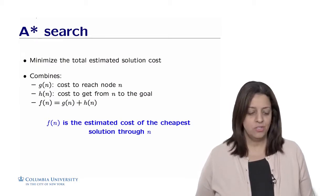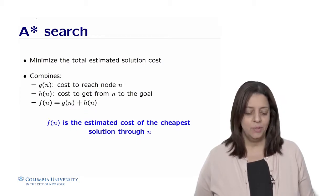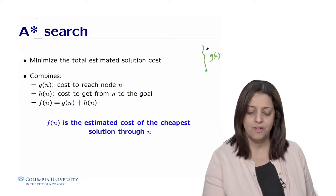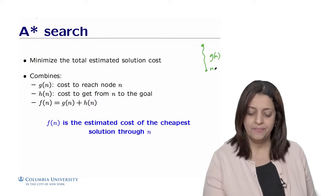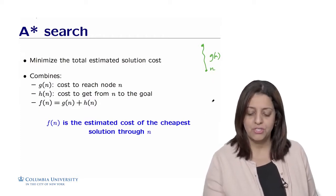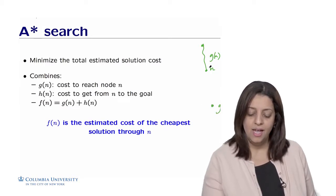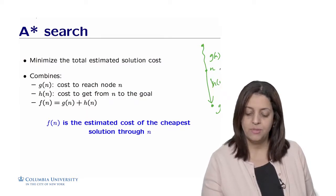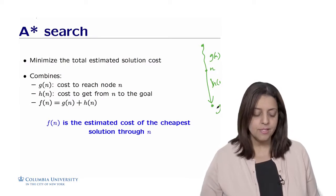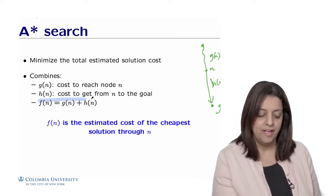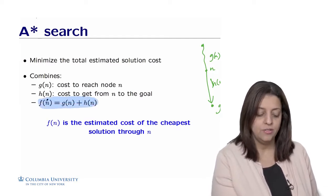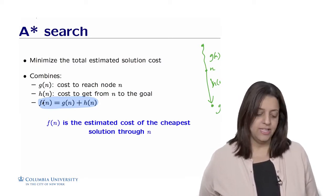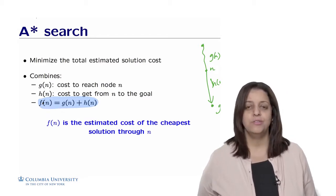To minimize the total estimated solution cost, we combine g(n), which is the real cost to go from the root to node n, and h(n), the heuristic that gives an estimation of the cost between n and the goal. The idea of A* is to combine g(n) and h(n) to get the function f(n), which is the estimated cost of the cheapest solution through node n.